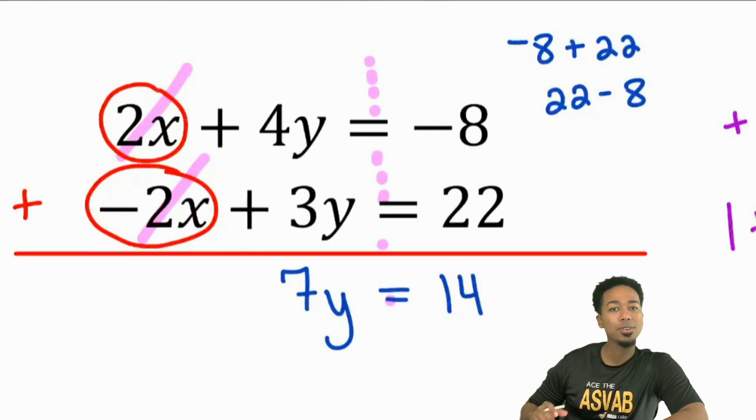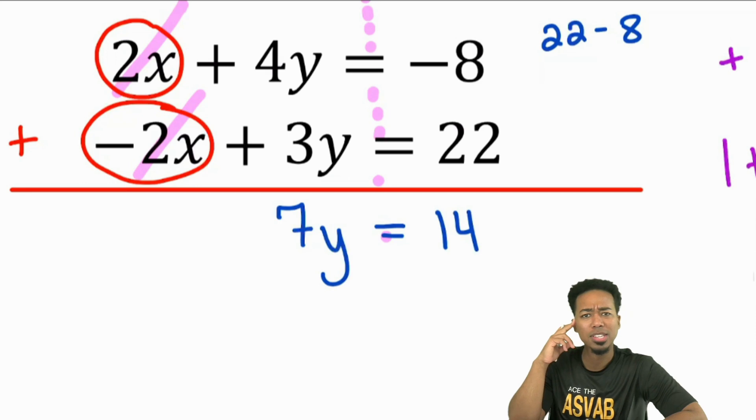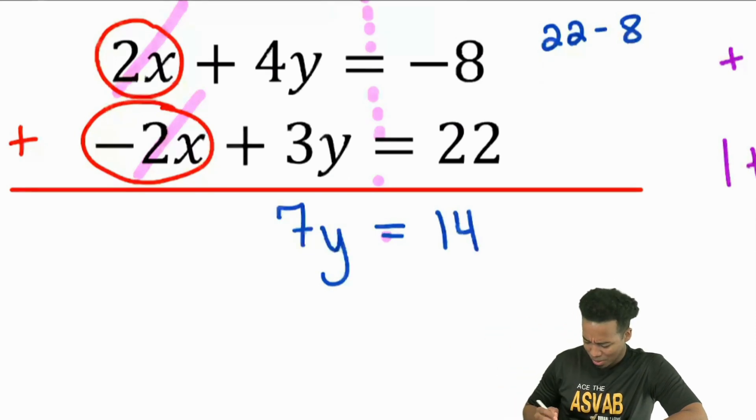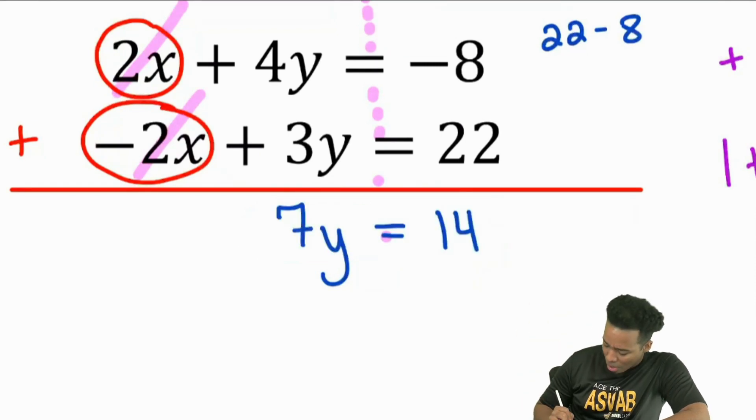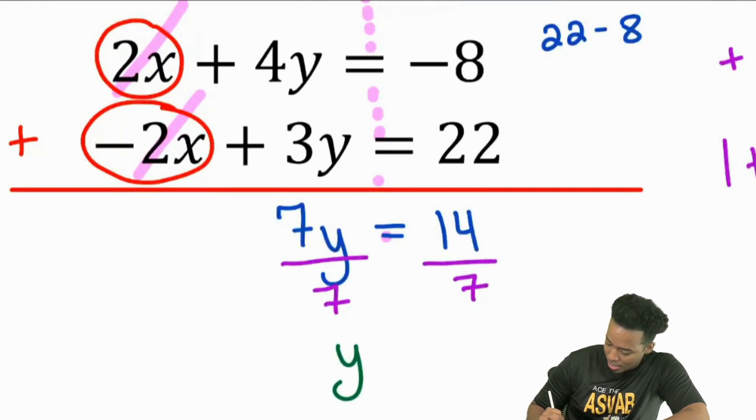So now from here, we got 7Y equals 14. Everybody, is this solvable? Is this easy to solve? Absolutely. Divide by 7 on both sides. And we are set. We're in business. Divide by 7, and we'll get Y equals 14 divided by 7 is 2. So boom, we have one of our variables.